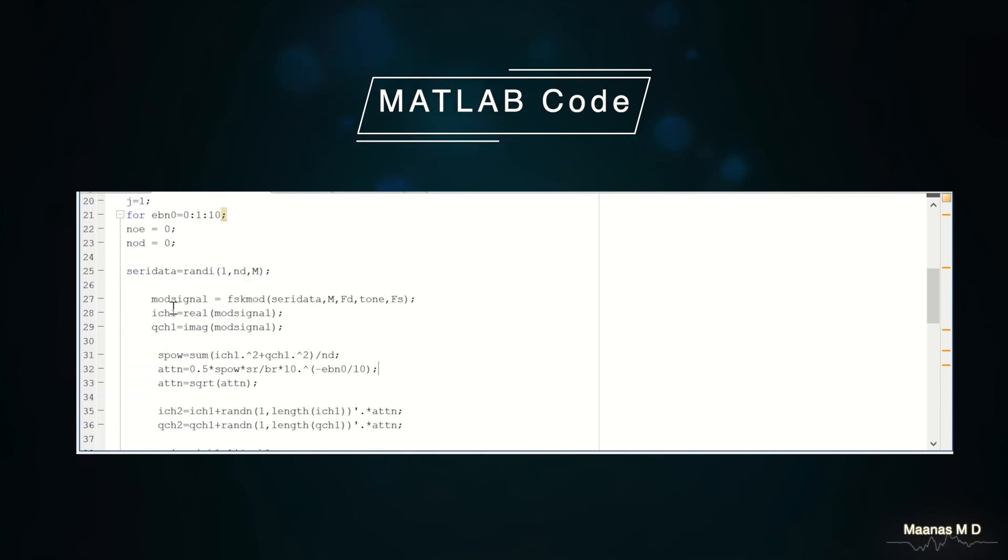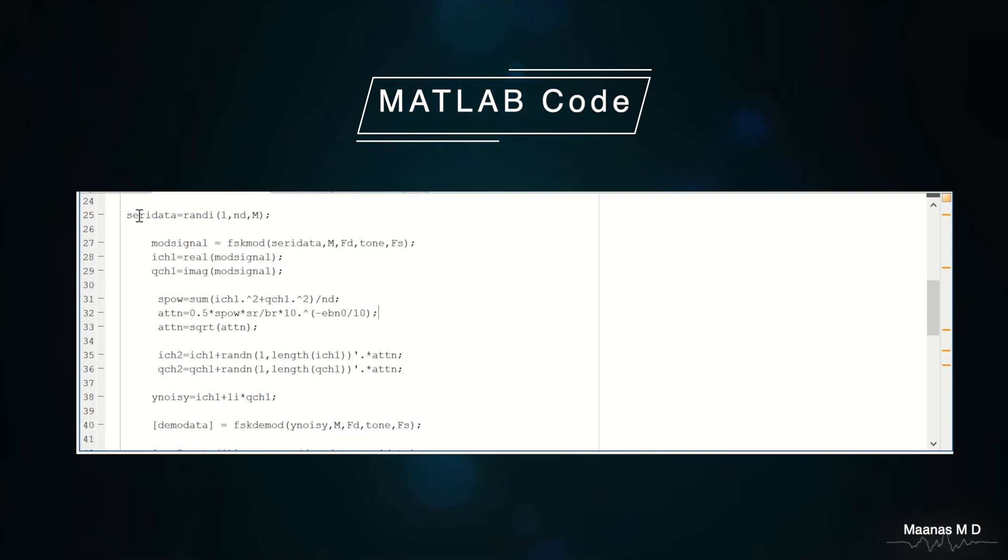Here in the code, we are considering the plot for 10 different SNR values, namely from 0 to 10 in steps of 1. We are creating a stream of random bits between 0 and 1 so that it acts as an input to our modulation.